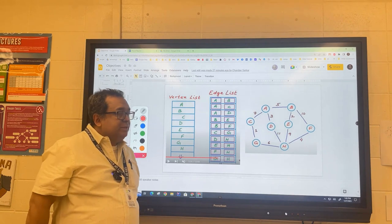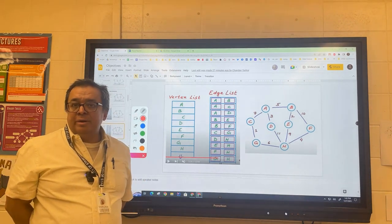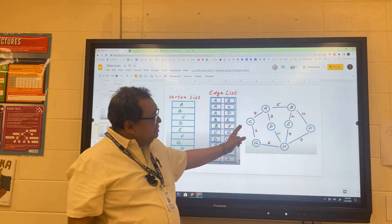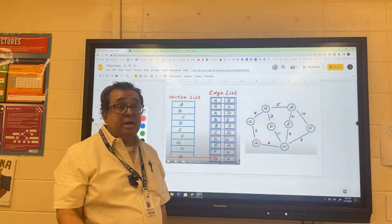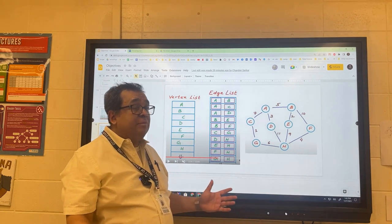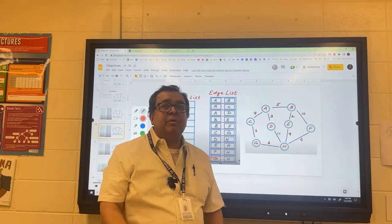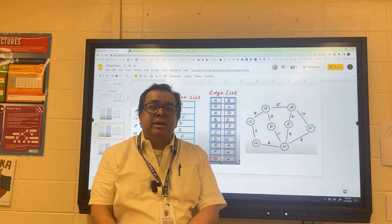What do you notice that's different about this graph versus the last one? It's weighted. That means that the edges have some weight or some cost associated with them. Most of the time the weights tend to be positive. What does it mean if a weight is negative? Think about that in a real-world application.